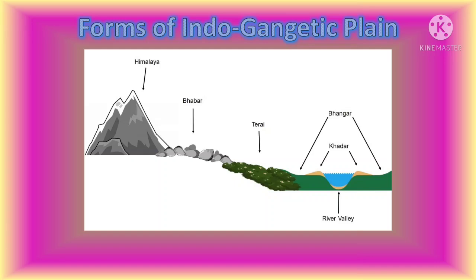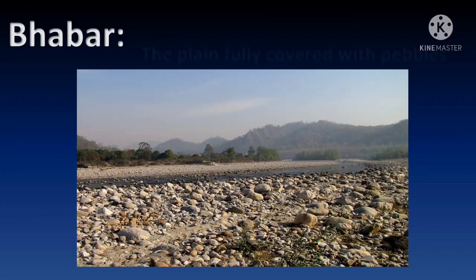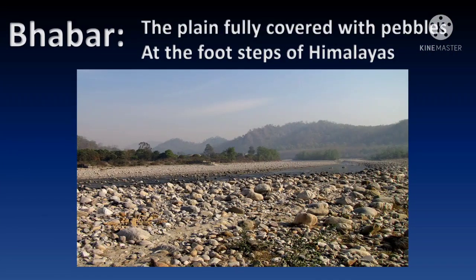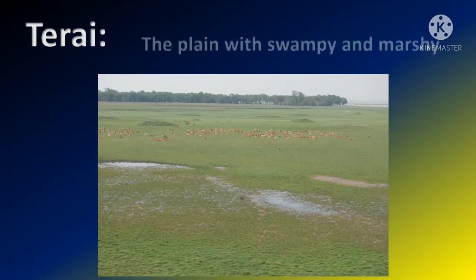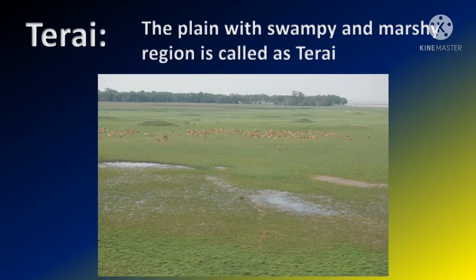By observing the nature of the soil, the Indo-Gangetic plain is further divided into four parts: Babar, Terai, Bangar, and Khadar. However, in this lesson we focus on Babar and Terai. Babar is the plain fully covered with pebbles at the foothills of the Himalayas. Terai is the plain with a swampy and marshy region.